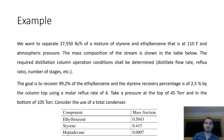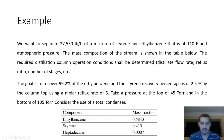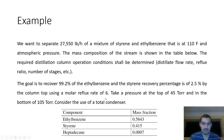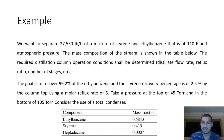The example we'll solve in the next video is the separation of styrene and ethylbenzene. We know the feed temperature, flow rate, and composition — which includes ethylbenzene, styrene, and heptadecane as a low-concentration impurity. The goal is to achieve 99.2% recovery of ethylbenzene in the top product. We also know the pressure conditions and reflux ratio. We'll go through all these details in the next video.